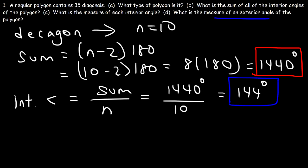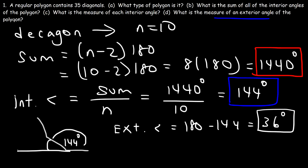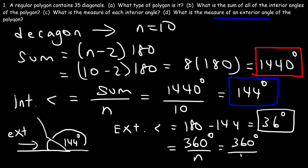Now let's determine the measure of an exterior angle. The interior angle is 144 degrees, so the exterior angle is 180 minus 144, which equals 36 degrees. Another way to calculate it is to use the formula 360 divided by n. For a decagon with 10 sides, 360 divided by 10 is 36 degrees — the same answer. And so that's it for this video. Hopefully you found it helpful, and thanks for watching.